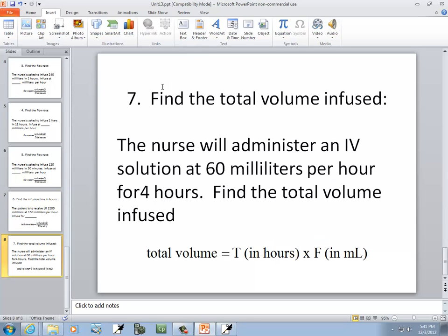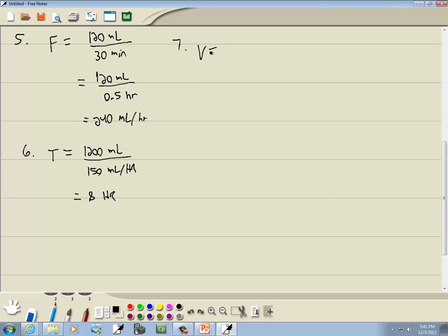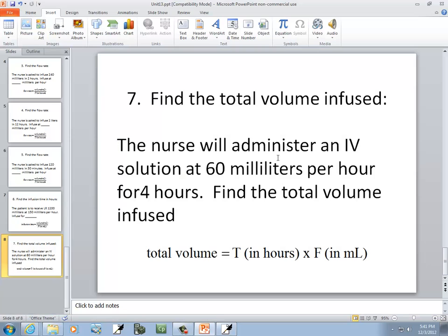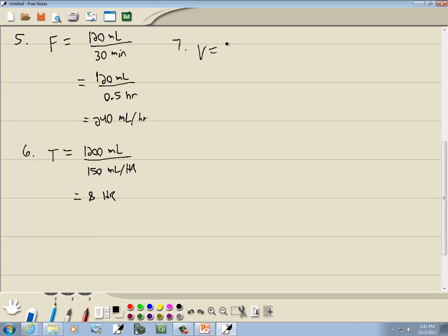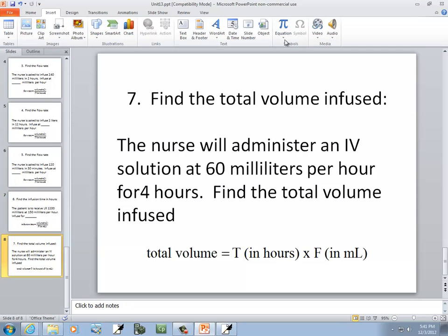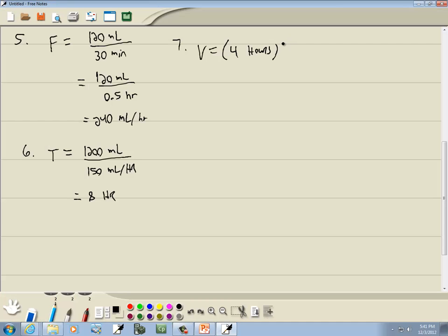Let's see, total volume. It's going to equal T in hours. This says for four hours, so we're going to have four hours times our flow rate in milliliters per hour. Our flow rate is 60 milliliters per hour, so 60 milliliters per hour. That gives us 240, and the hours would cancel here. We're just left with milliliters. So that would be our volume.